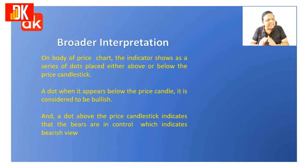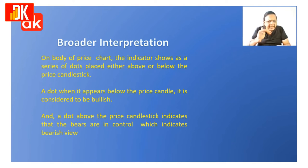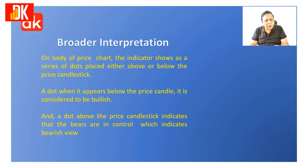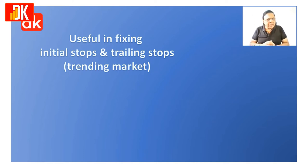By looking at the price chart itself, you can immediately say whether at this point of time the price is trending up, momentum on the upside is higher, or momentum on the downside is higher. However, when we apply it through other studies, accuracy would be phenomenal. This indicator is very useful to fix the initial stop loss and trailing stop loss, so that you can design a strategy to ride the trend.